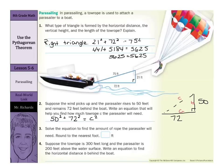Now, solve the equation to find the amount of rope the parasailer will need. Round to the nearest foot. Well, 50 squared is 2,500. 72 squared is 5,184. And that needs to equal C squared. Well, when you add 2,500 to 5,184, you get 7,684 equals C squared. Then, take the square root of both sides. And you get about 87.6 feet equals C. And we're asked to round to the nearest foot. And the 6 tenths will round the 87 up to 88 feet.